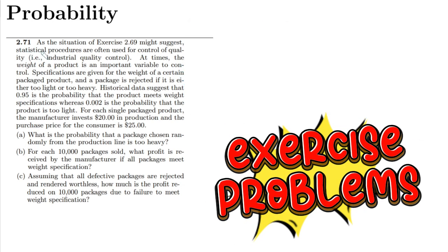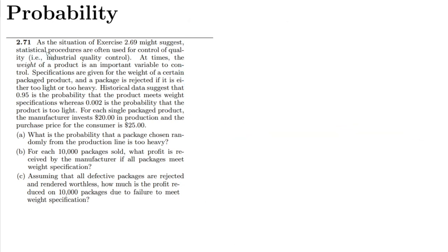Welcome. This is question 2.71. The problem relates to industrial quality control — at times the weight of a product is an important variable to control. Specifications are given for the weight of a certain packaged product, and a package is rejected if it is either too light or too heavy. Historical data suggests that 0.95 is the probability that the product meets weight specifications.